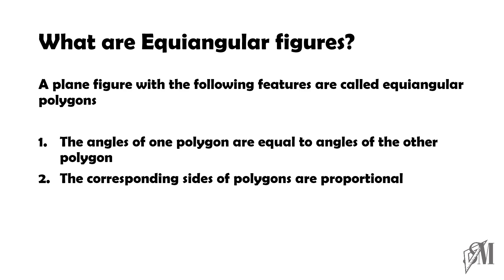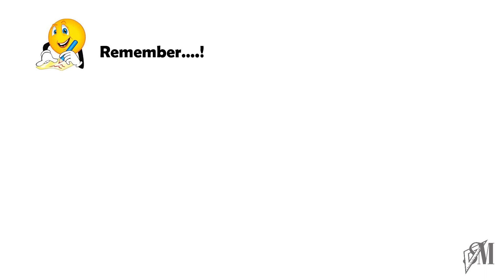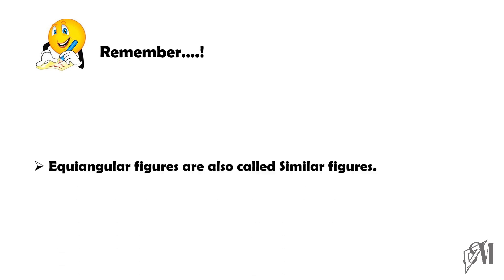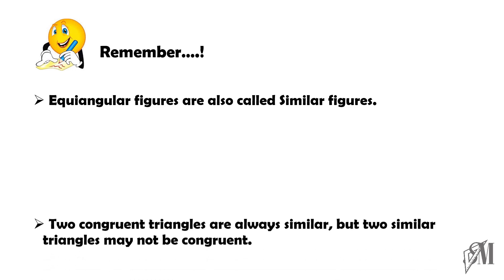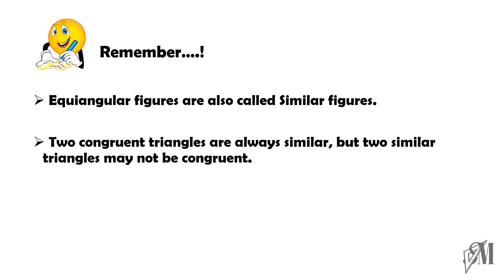You have to remember the following facts. Equiangular figures are also called similar figures, so equiangular triangles and similar triangles mean the same thing. On the other hand, two congruent triangles are always similar or equiangular. But you should remember that two equiangular triangles may not be congruent.